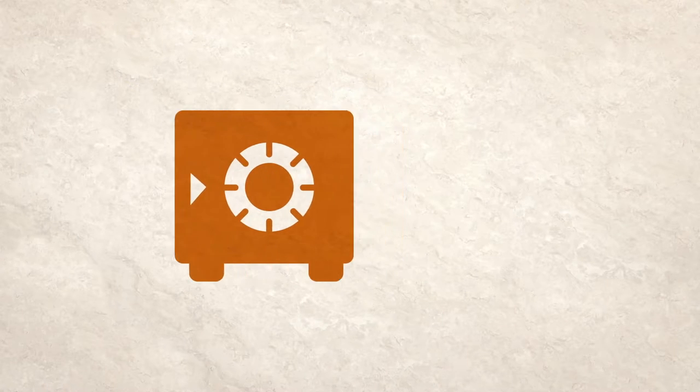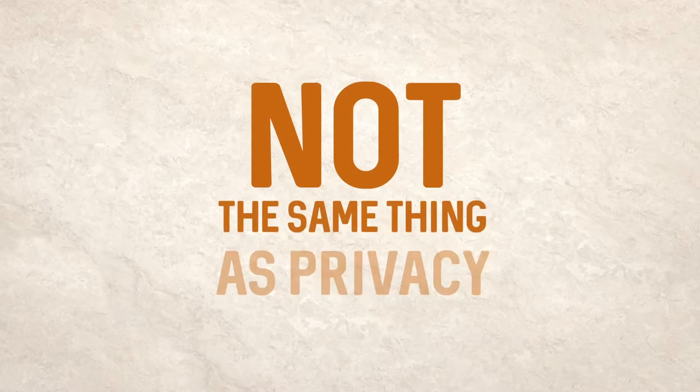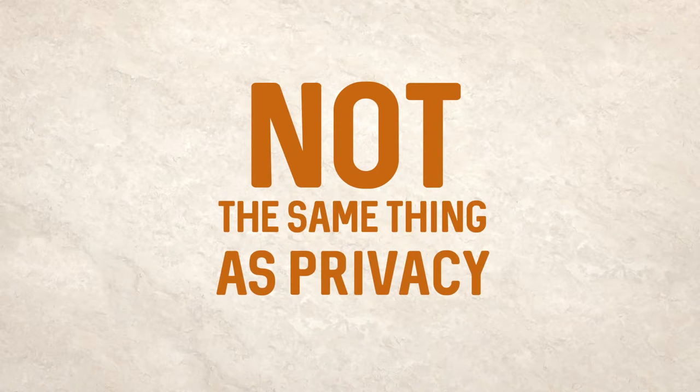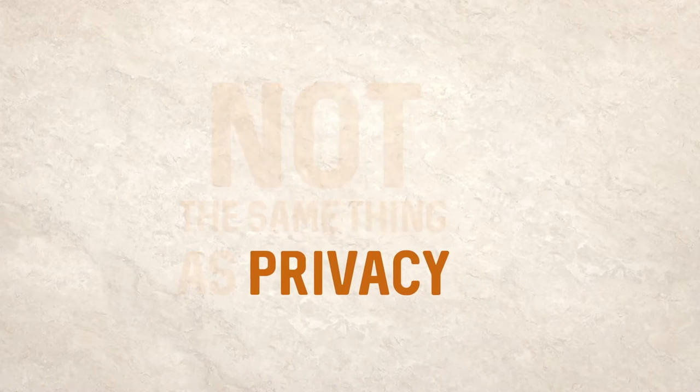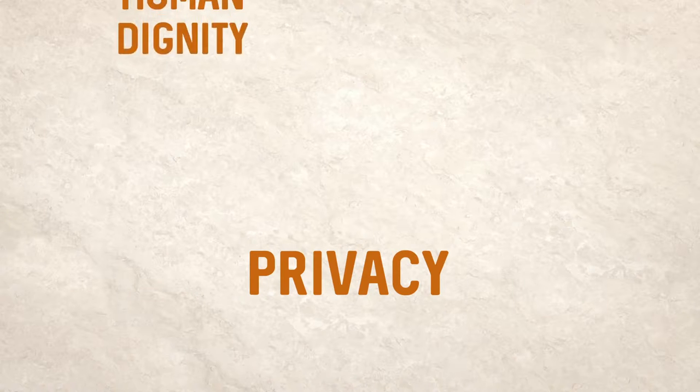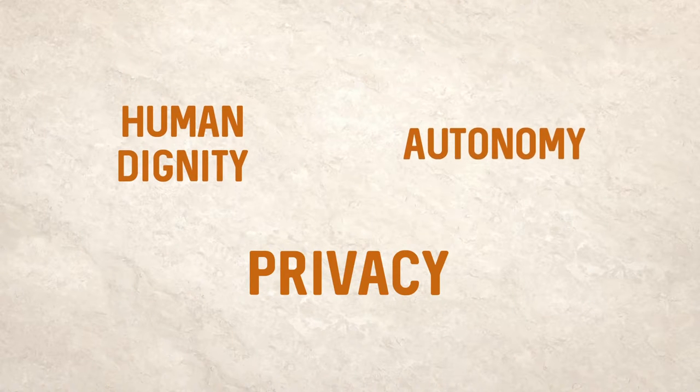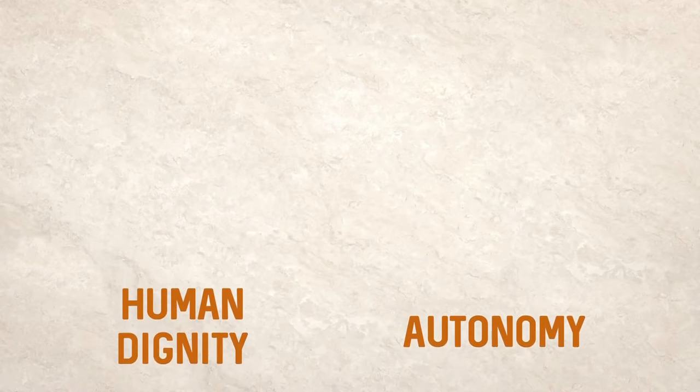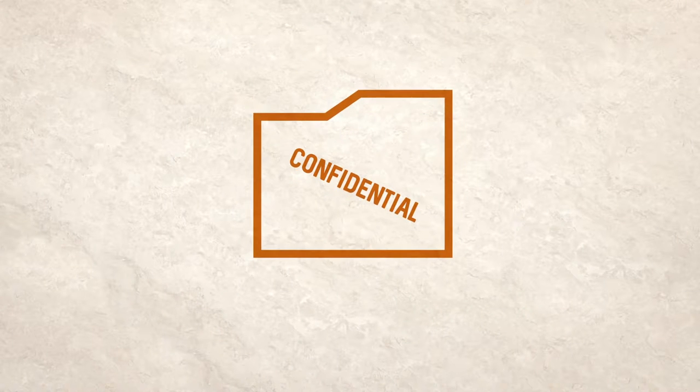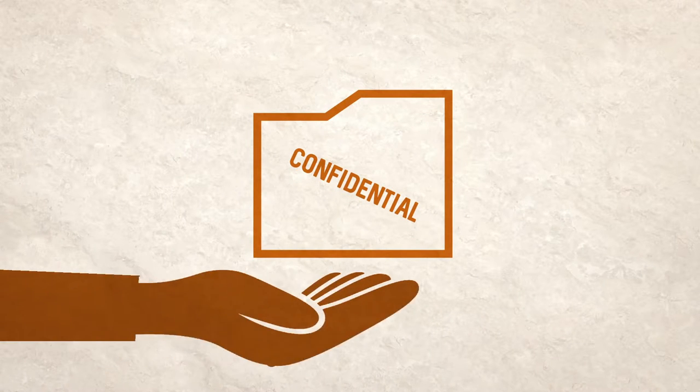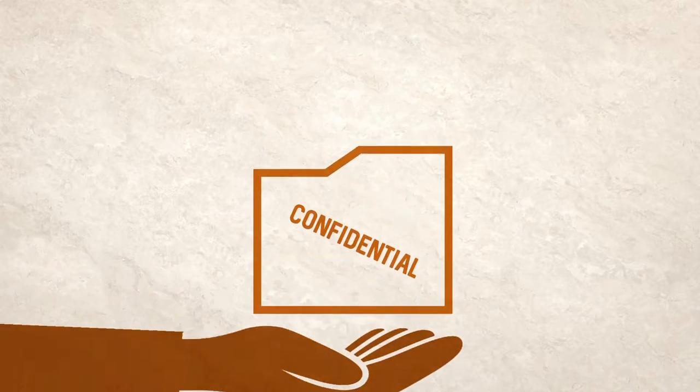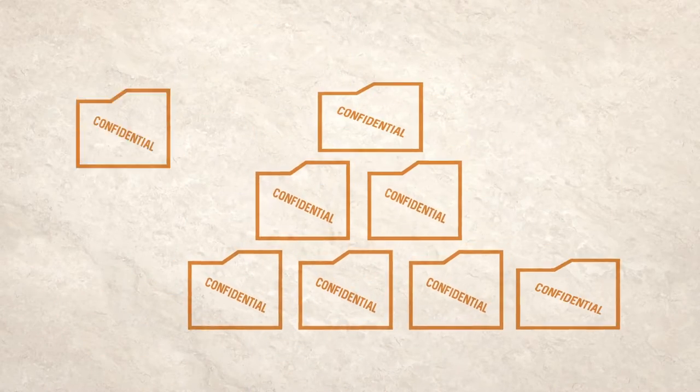Contrary to popular belief, it is not the same thing as privacy. Privacy is a broad concept referring to the conditions which enable a basic foundation of human dignity and autonomy. Data protection is more specific. It's concerned with the ways third parties handle the information they hold about us. How it is collected, processed, shared, stored, and used.